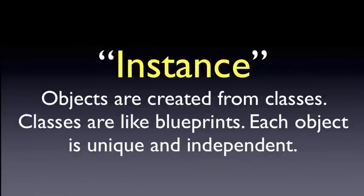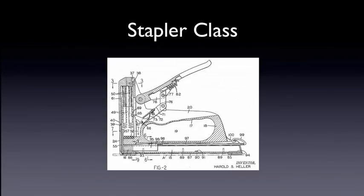One of the other things we need to know about objects is that we're going to create what are called instances of objects. In other words, we need to actually build objects, and we've done that when we built our scanner objects and our string objects. So where do these objects come from? Objects are created from classes, and a class is like a set of blueprints — it defines what an object can be. Every object that we create from those blueprints is unique and independent. Objects are built using the new operator, as we'll see in code examples.